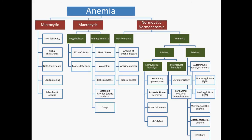Another thing you often see with iron deficiency anemia is Plummer-Vinson syndrome, which involves esophageal webs and atrophic glossitis. So if you see those three things together — iron deficiency anemia, esophageal webs, and atrophic glossitis — think Plummer-Vinson syndrome.